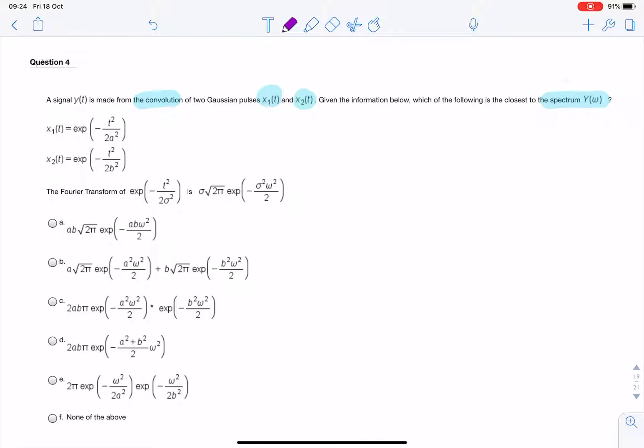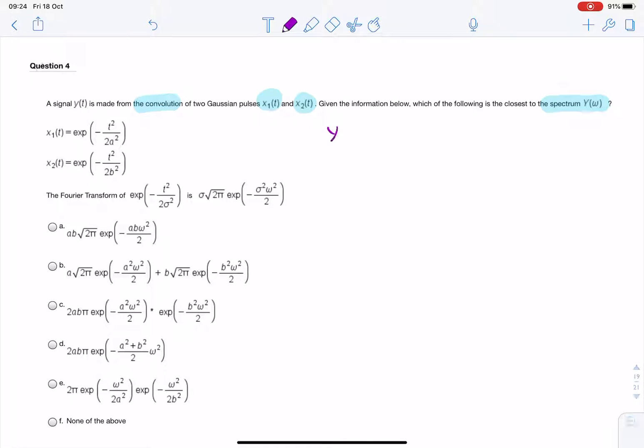So we don't have to do the integration. We can use the convolution property of the Fourier transform. We know that if we have some signal, x1 of t, and it's convolved with another signal, x2 of t,